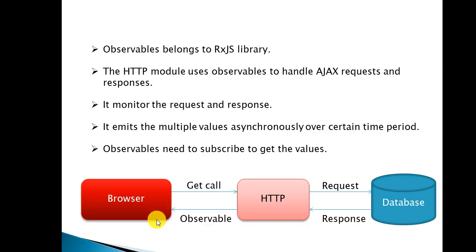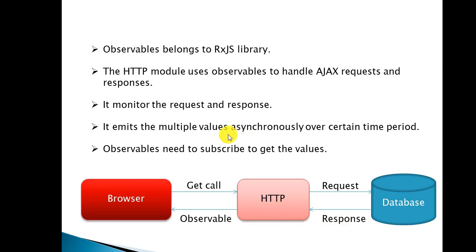If you make any requests — it could be HTTP GET or POST — that request will go to your server, and that server could be any API or database. Whatever response comes back will come via the HTTP module, and the response will be in the form of an observable. In order to get the value from an observable, you need to subscribe. We'll see each of these points in practice.